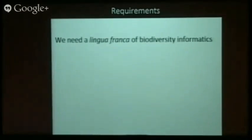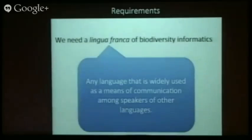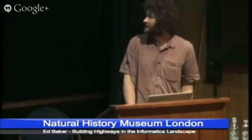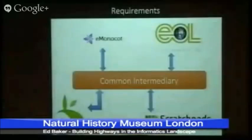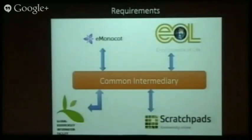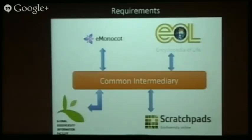We need something better than everything talking to one thing at a time. A lingua franca of biodiversity informatics — by definition, the language that is the means of communication among speakers of other languages, a kind of intermediary. So if you publish your data in one format and read that same format, you can talk to anyone playing in this field.